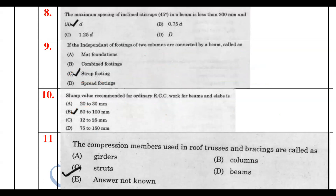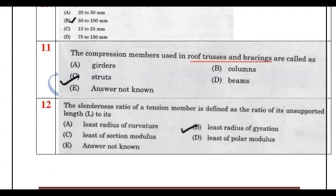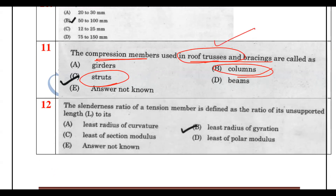The compression member used in roof trusses and braces is next. Then, for the slenderness ratio of a tension member, it is the effective length divided by the least radius of gyration.